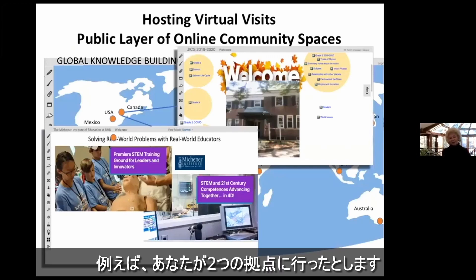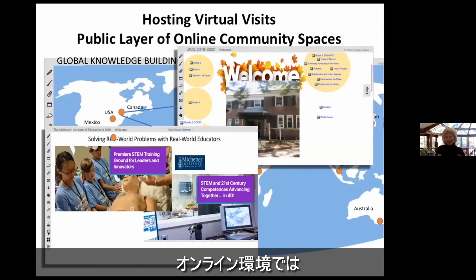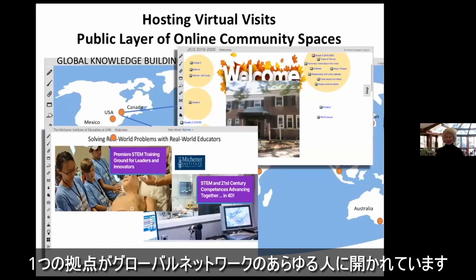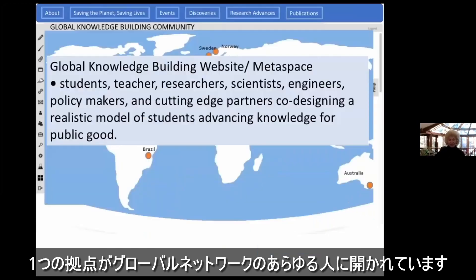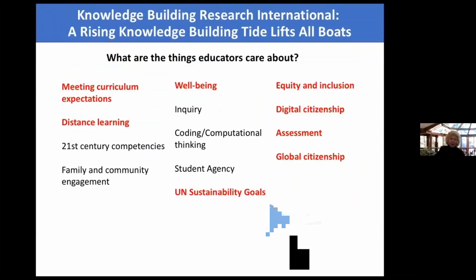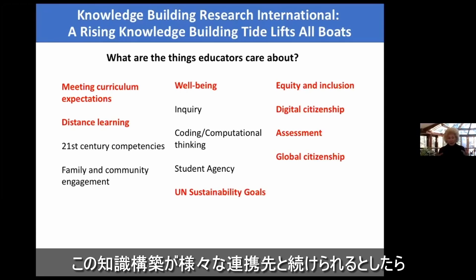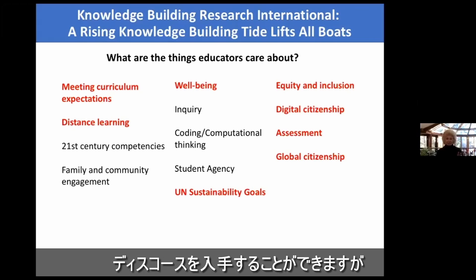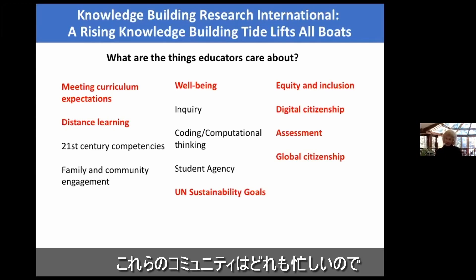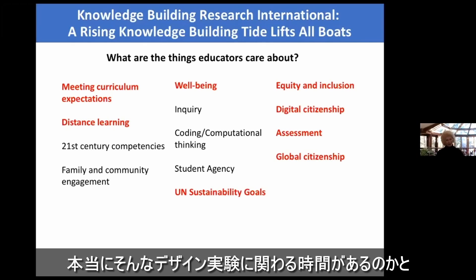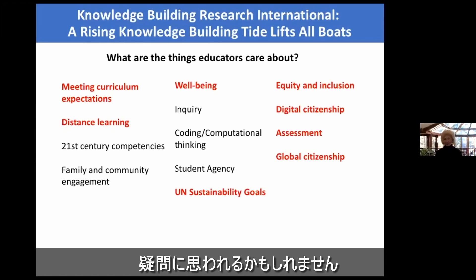I'm imagining, for instance, that if you went into the two sites I've shown you, on their online environment they would have at least one site open to anybody in the global network. So if this knowledge building is going on in all of these varied contexts, we will have discourses from very broadly distributed sites. One might also ask: with how busy all communities are, could they really take time to be engaged in such a design experiment?